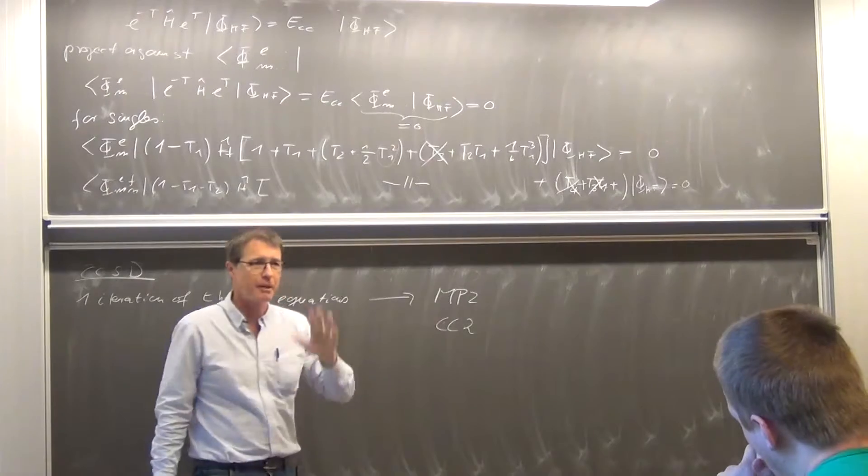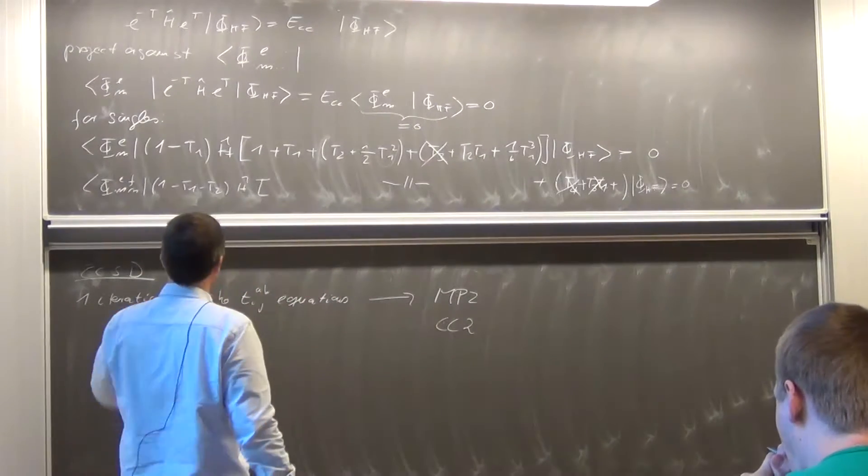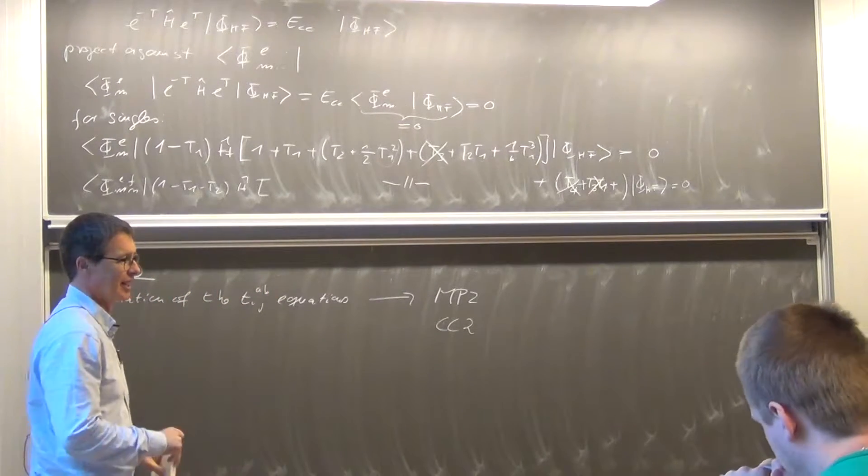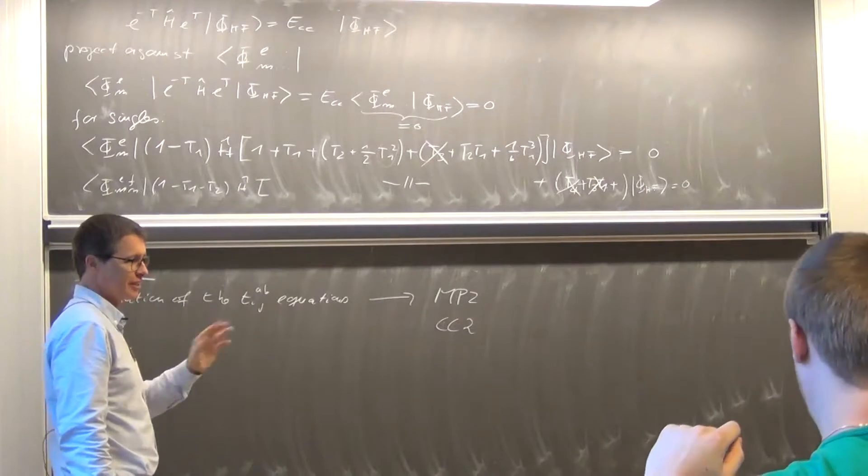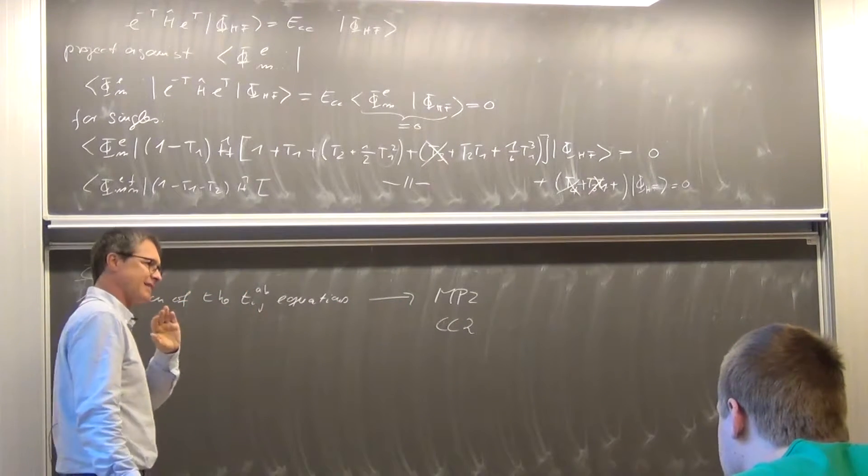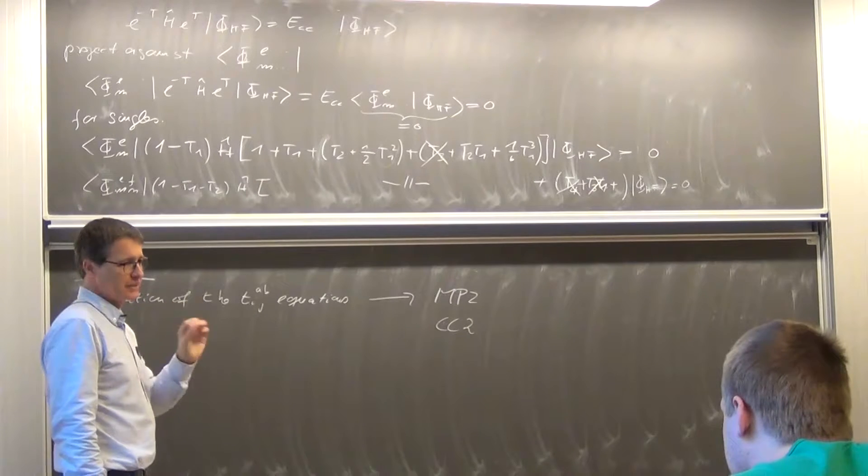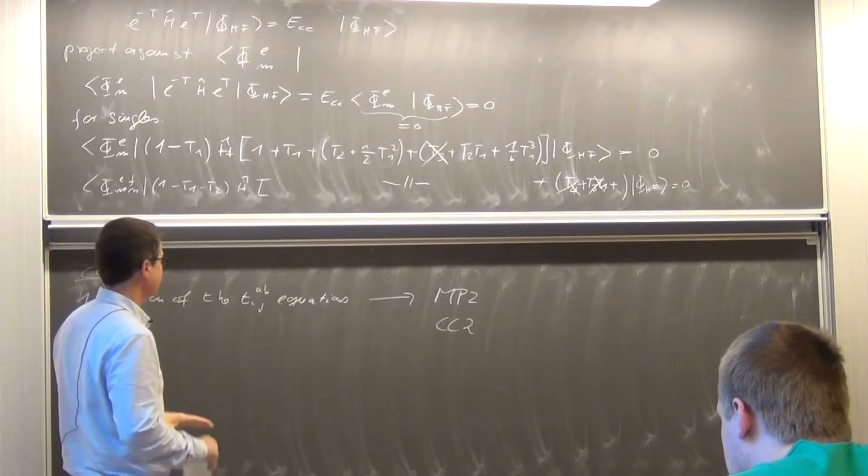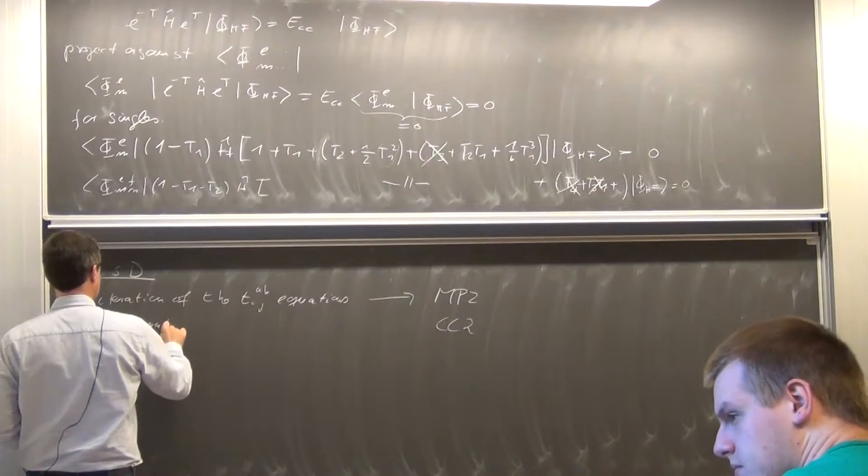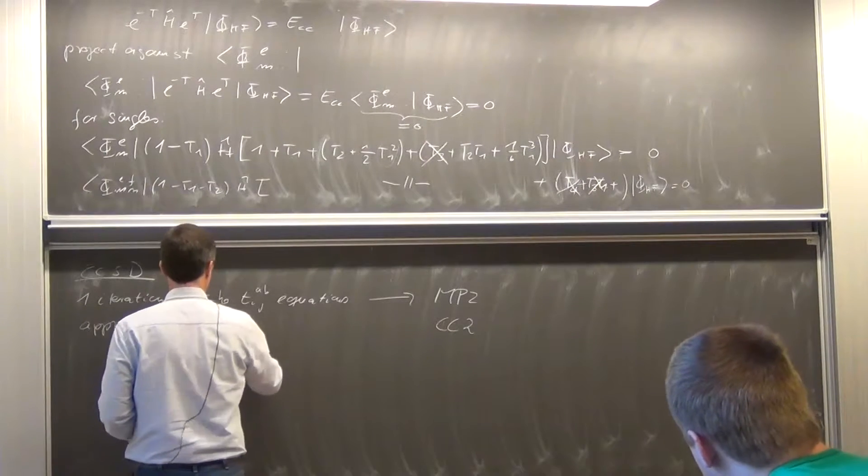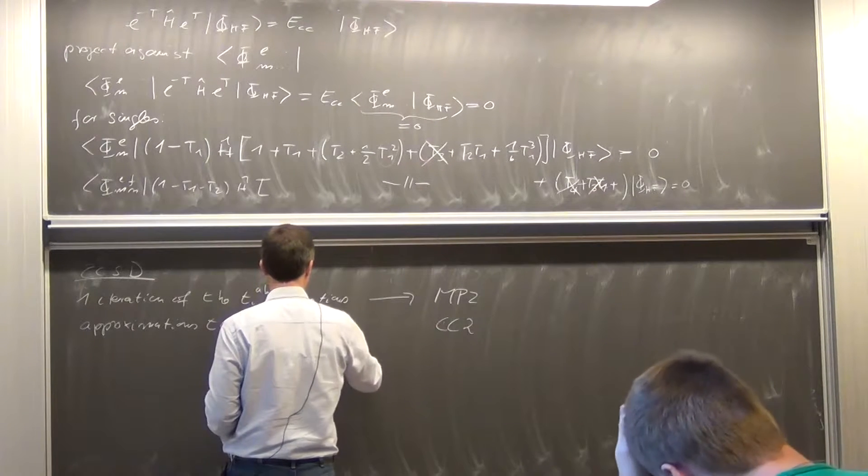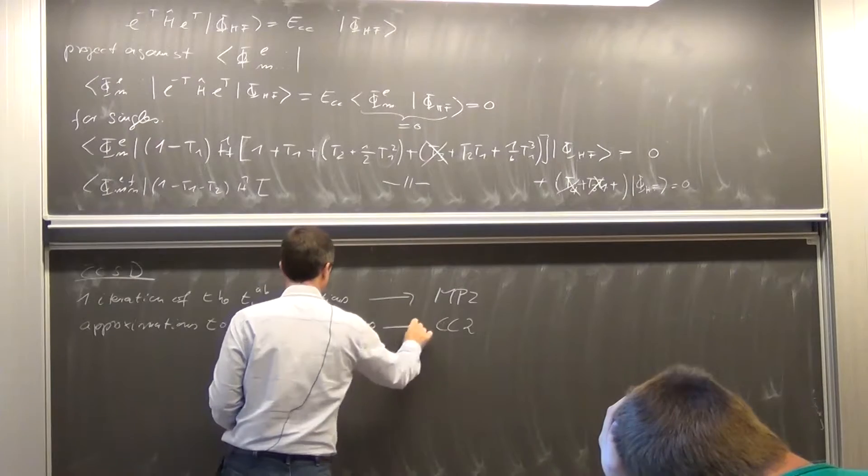And one uses some kind of a perturbation theory to put some orders on the different operators and says, okay, you're high order, you go out. There is a clear, I mean, it's not just look at how I don't like you, I don't know how to calculate you, you go. No, there's a well-defined perturbation theory approach to do that systematically. So what you do, you do approximations to the TIJAB equations, to the doubles equations, and it gives you CC2.